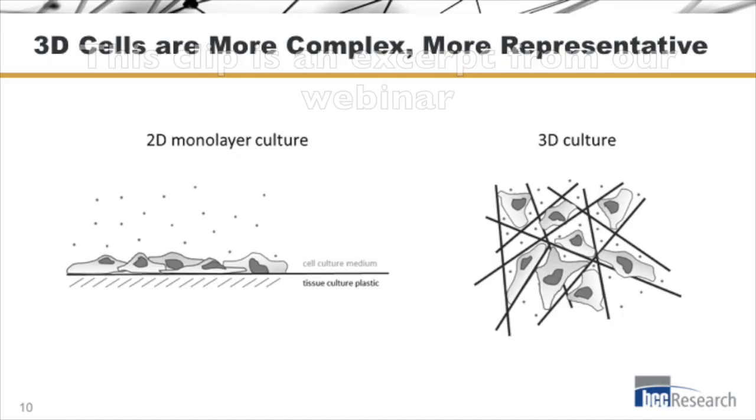Just a short grounding for those that aren't steeped in this already. Traditional 2D monolayer cell culture - think of cookies on a tray, on a baking sheet. That's where they are. They can expand out a little bit side to side.